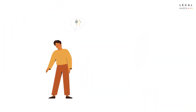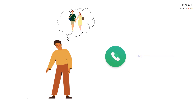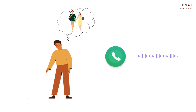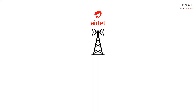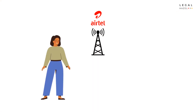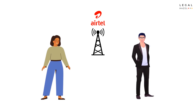The husband Anil, on suspicion against his wife of having an illicit relationship with Raj, a third party, filed an application before the family court calling for the call records of Tina and Raj to prove the adultery. Although the family court allowed the relief at first instance, after review of its order, the court directed the mobile operator to produce the mobile tower location details of both Tina and Raj instead of their call records.